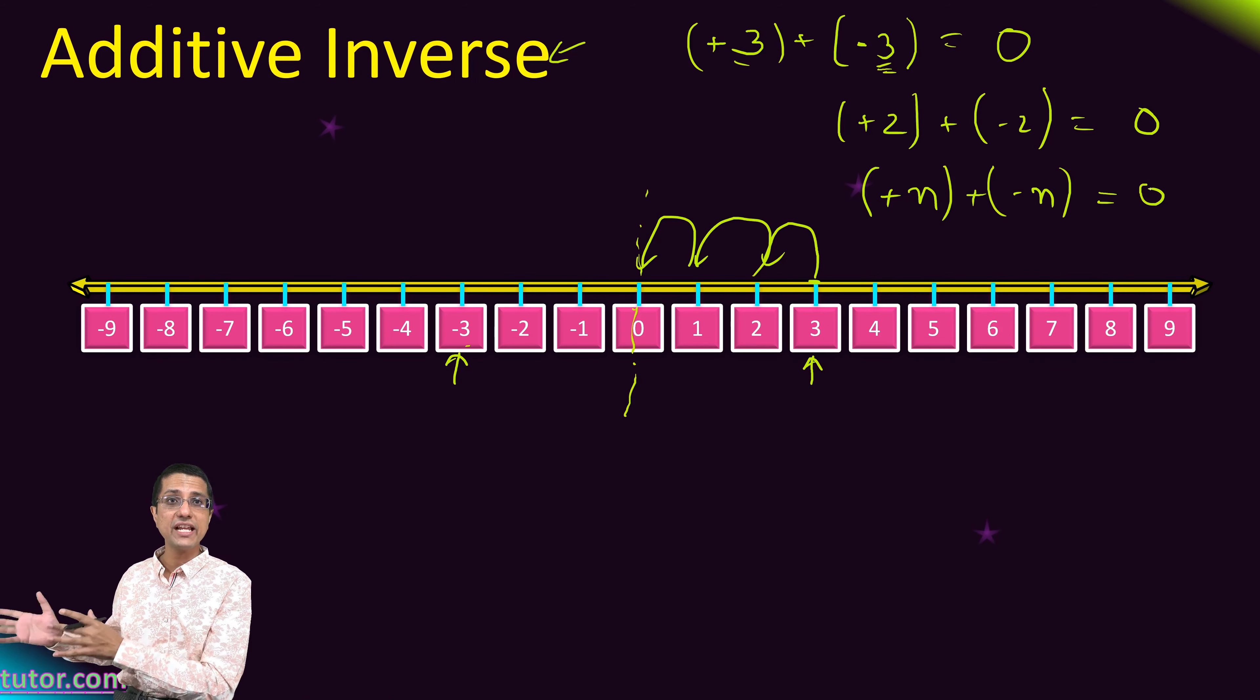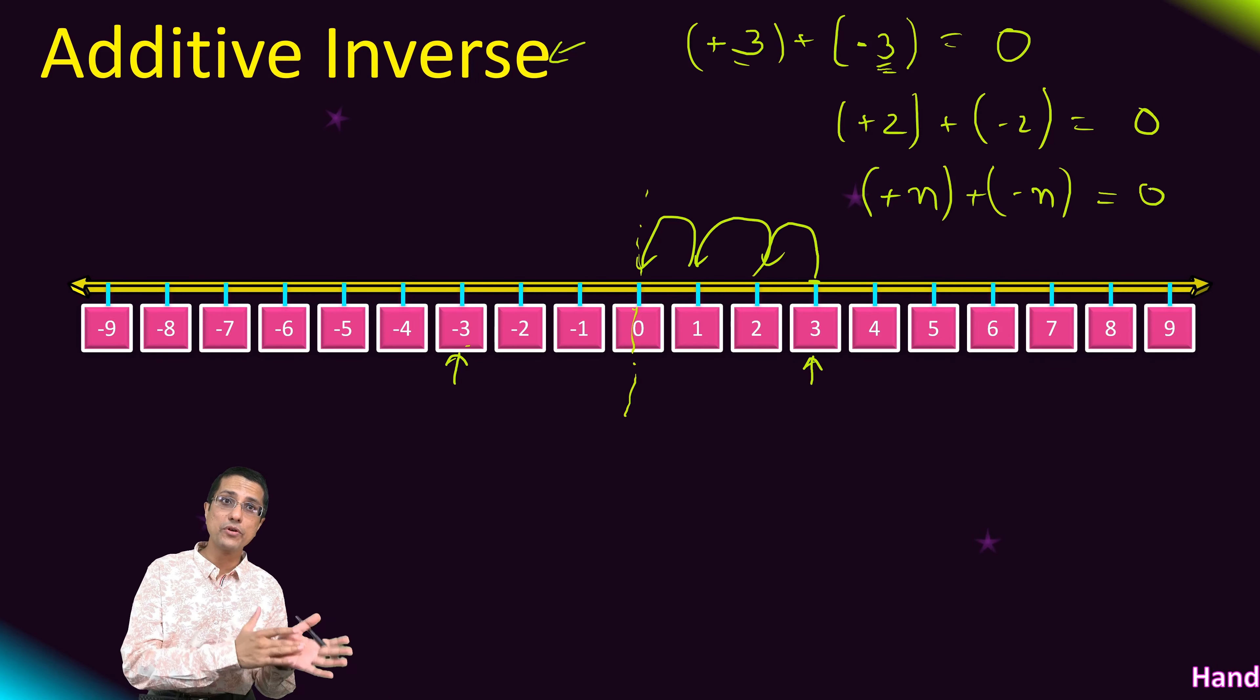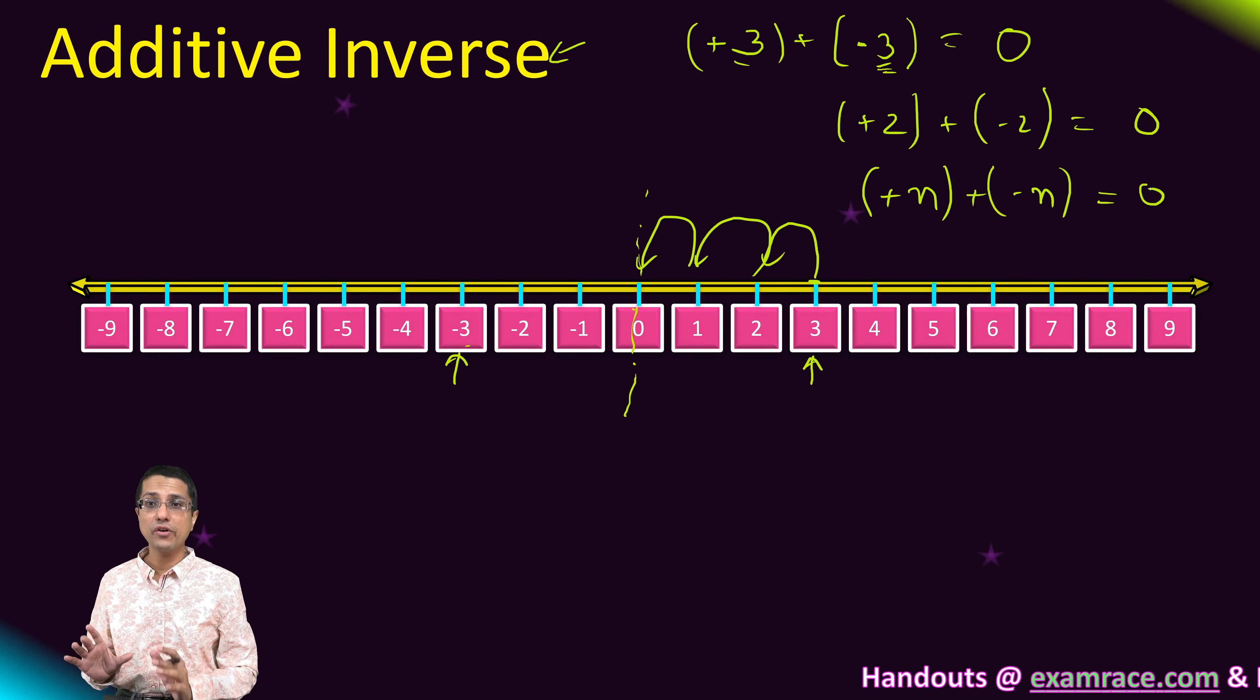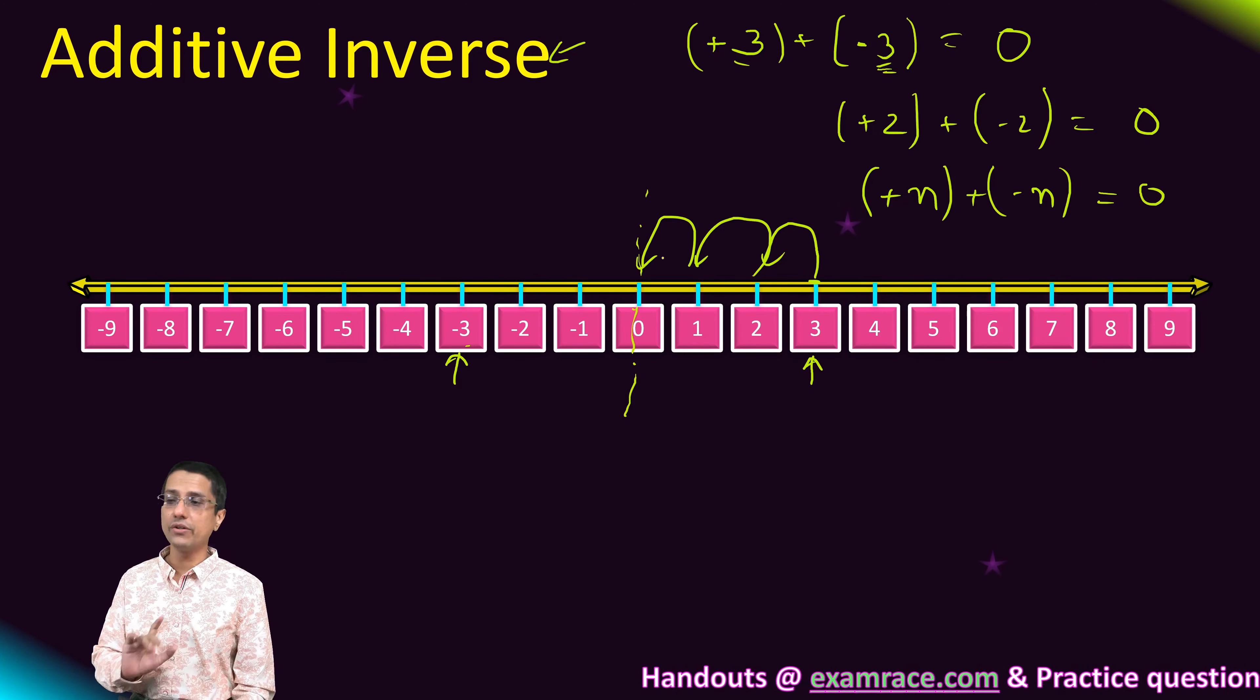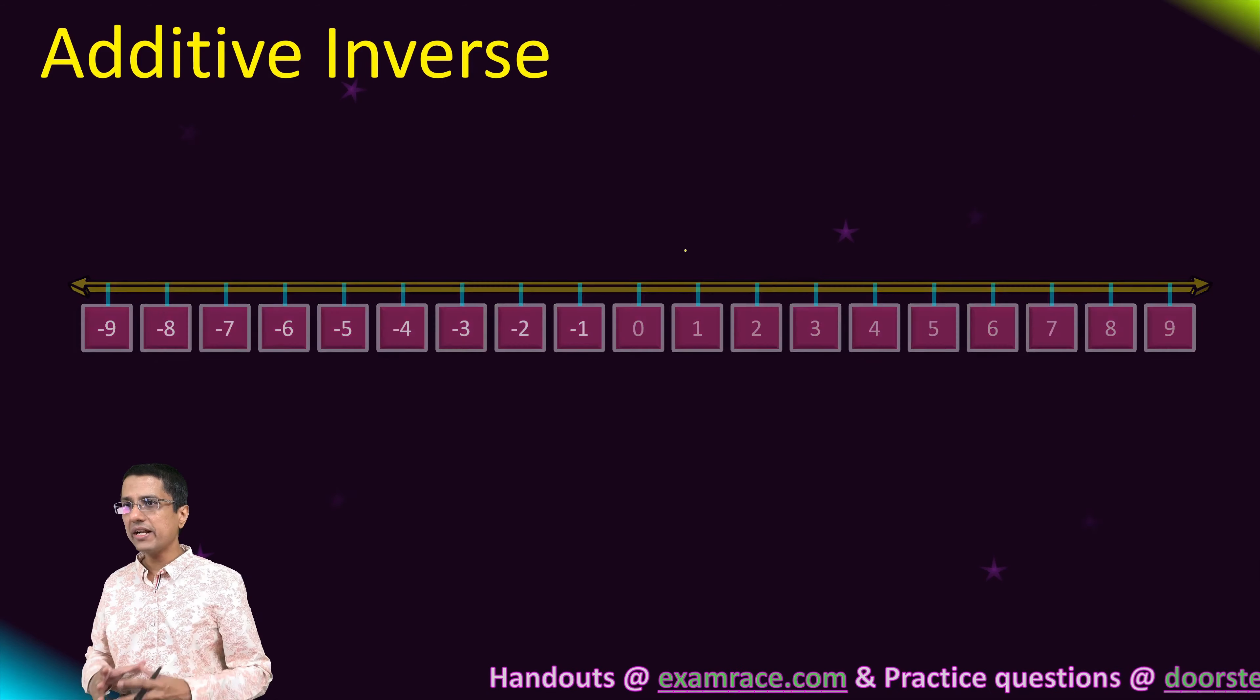If the number is on the negative side, the additive inverse will be on the positive side. If the number is on the positive side, then the additive inverse will be on the negative side, except for 0. So that is the property of additive inverse.